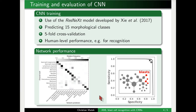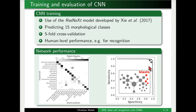If we use the network just to predict whether a given cell is malignant or not — whether it is a blast cell or not — we actually come close to human performance. Looking at this ROC curve and the human performance shown in the corner, you can see that the two are pretty comparable.